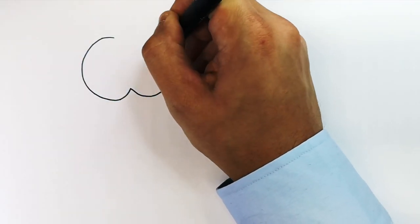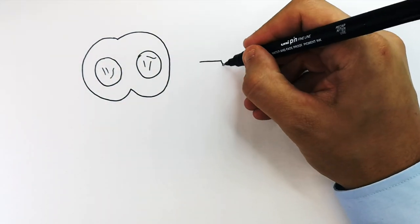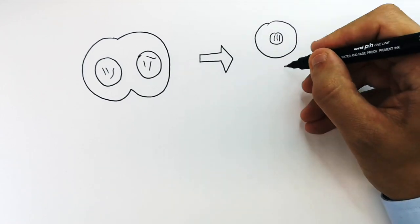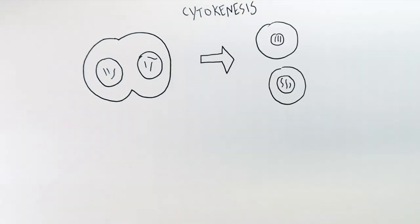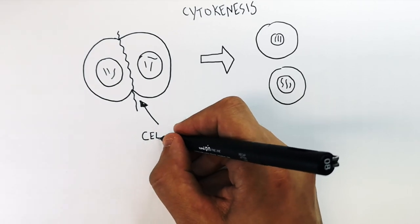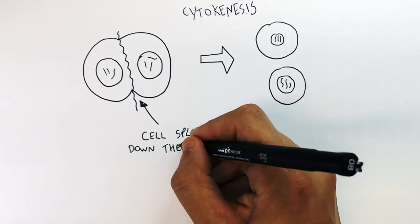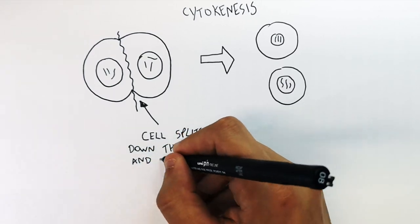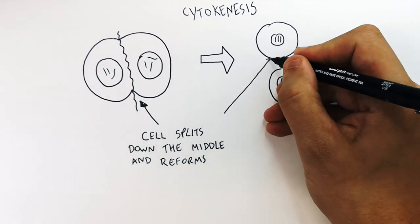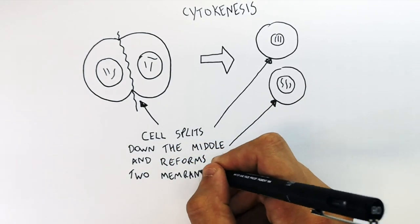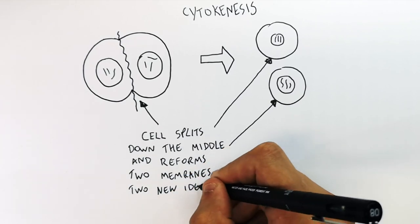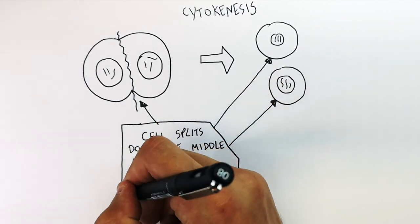We now have the product of telophase, where two new nuclear membranes are formed around the chromosomes. What happens next is that this cell has to split into two identical cells — this is cytokinesis. Cytokinesis is when the cell splits in two. The cell splits down the middle and reforms, creating two new membranes, and two new identical cells are formed. That is cytokinesis.